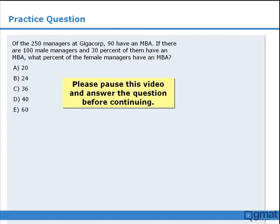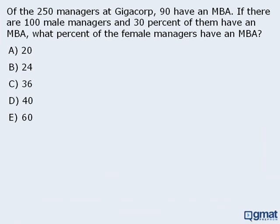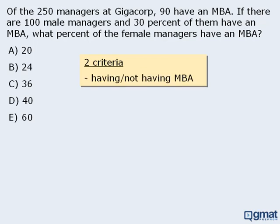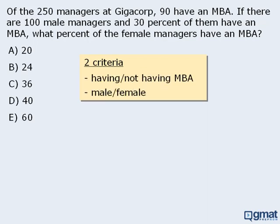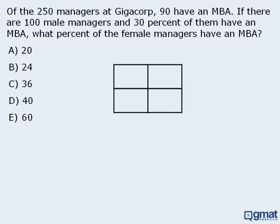Please pause this video and answer the question before continuing. In this question, we want to determine what percent of the female managers have an MBA. Notice that we have a population of managers with two criteria associated with each manager: having or not having an MBA, and being male or female. As such, we can solve this question using the double matrix method.